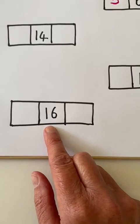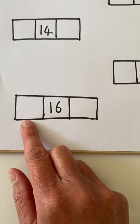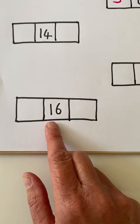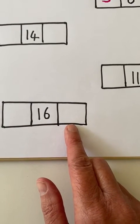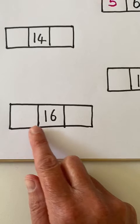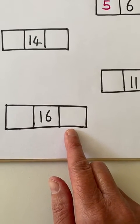What is one less than 16? What's one more than 16? It's the number that comes before and the number that comes after when you're counting.